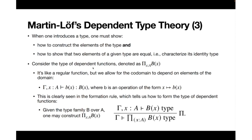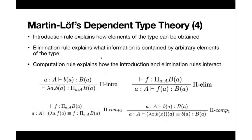If we take the type of dependent functions — essentially like ordinary mathematical functions but dependent, meaning the function sends x not to some fixed type but to B(x), where B depends on x — we have the formation rule: given a context Γ with type A and a well-formed type B(x) for each term x, we can form the dependent function type. The introduction rule says that given a term b(a) of the dependent type, we can form a lambda term, which is a dependent function.